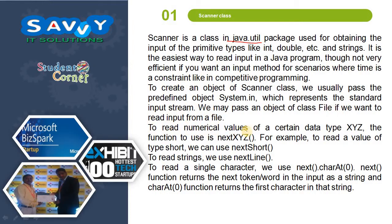To read numerical values of a certain data type XYZ, the function to use is nextXYZ. For example, to read a value of type short we can use nextShort. To read strings we use nextLine. To read a single character we use next() and charAt(0). The next() function returns the next token or word in the input as a string, and charAt(0) returns the first character in that string.